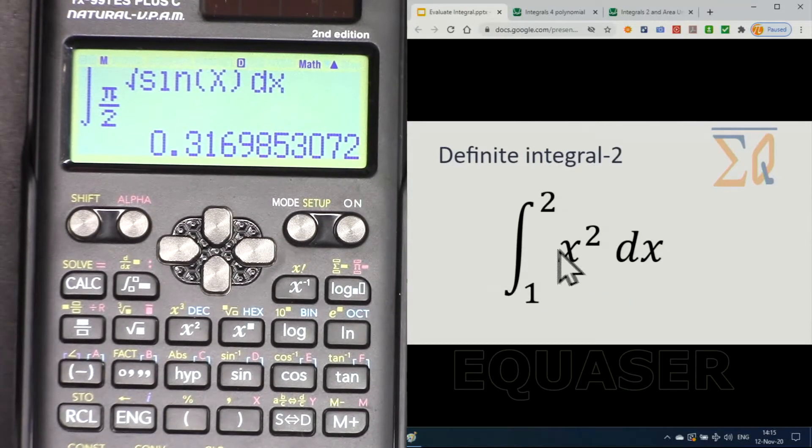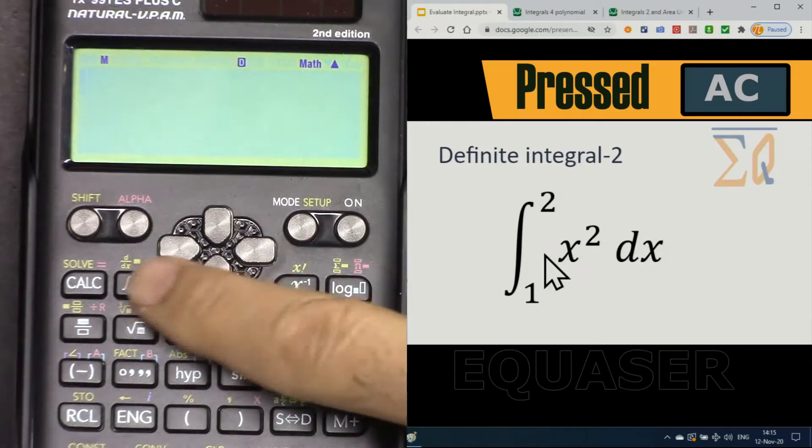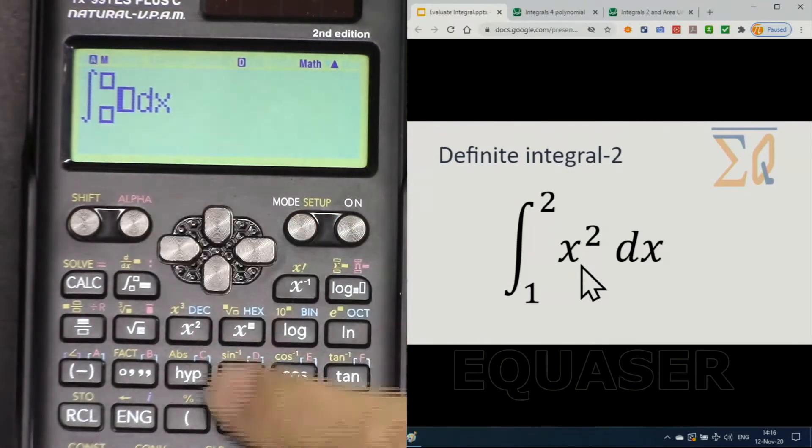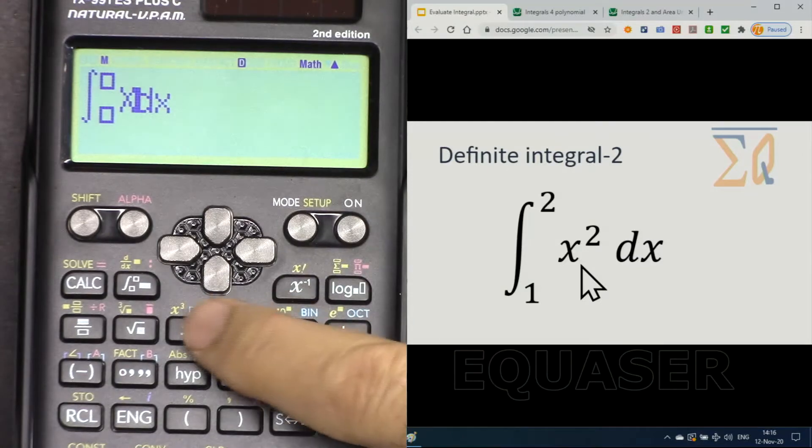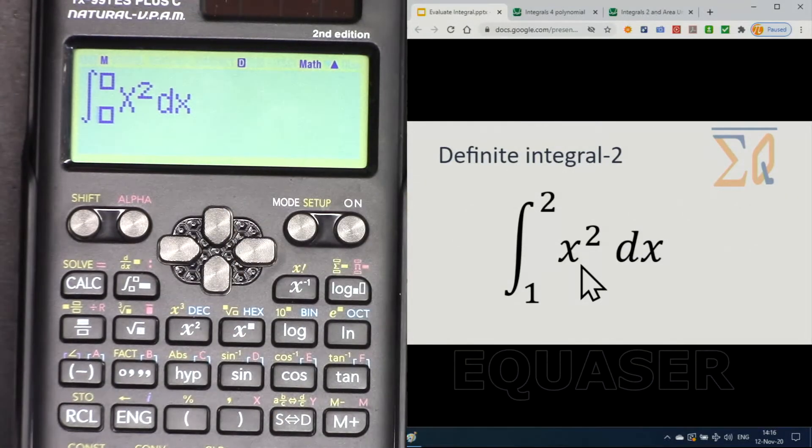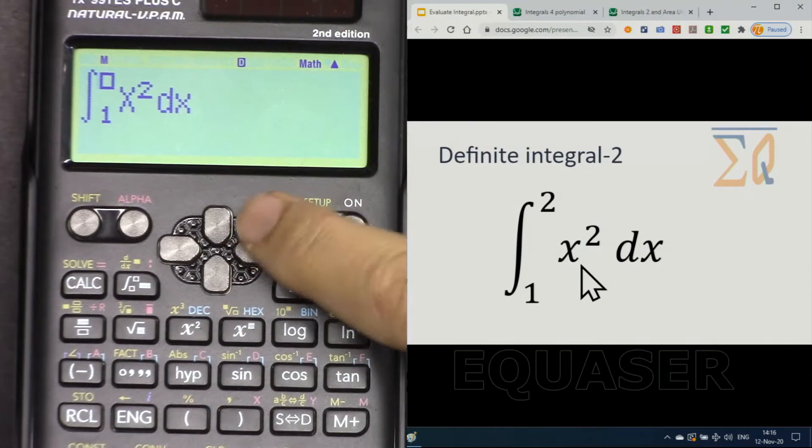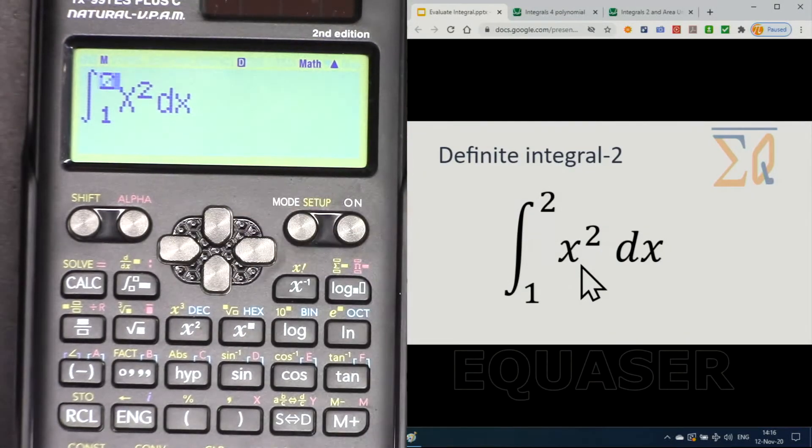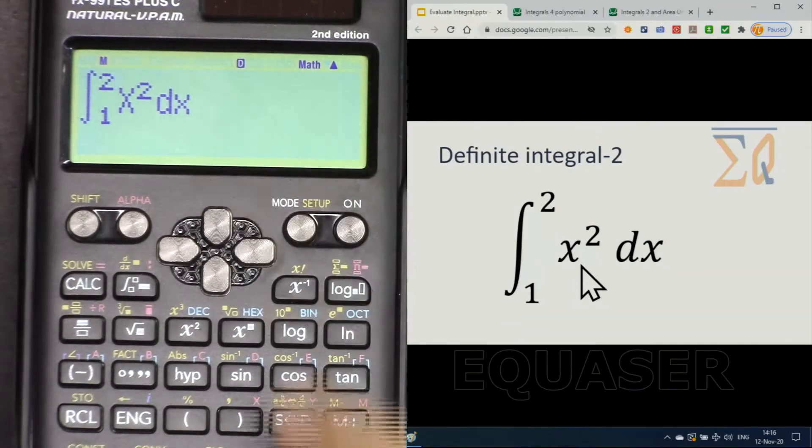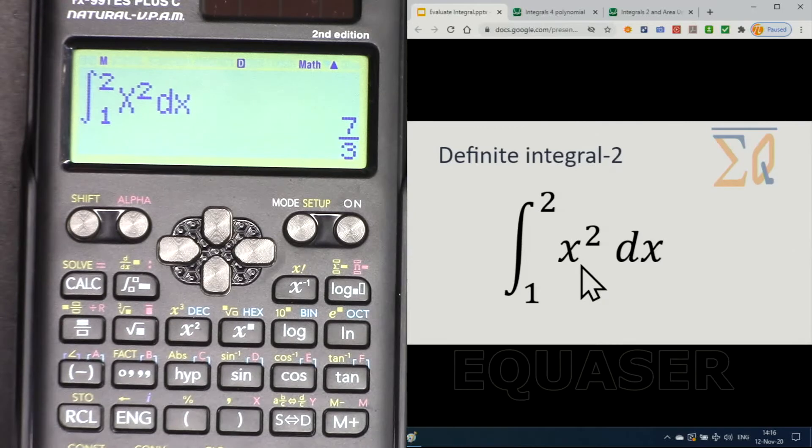Now let's see how we can do this one. Press all clear, press integration, then x squared—press alpha and then x and then squared. This is very simple. Come to the right, it goes to the lower bound 1, and come to the right again, it goes to the upper bound 2.